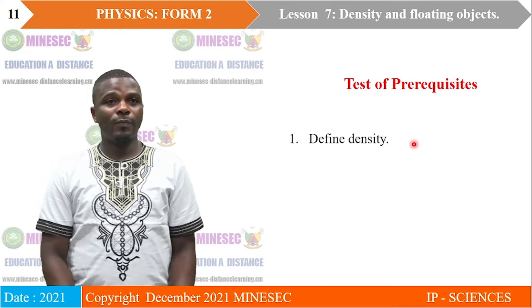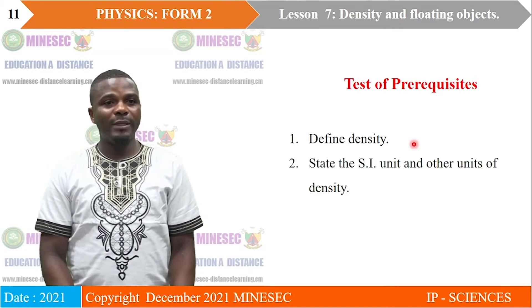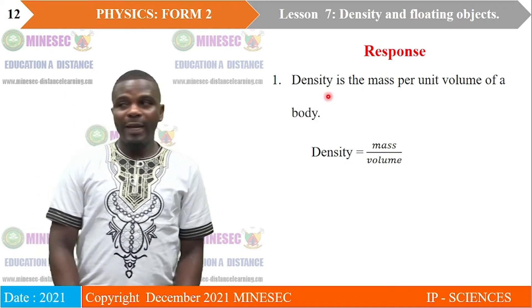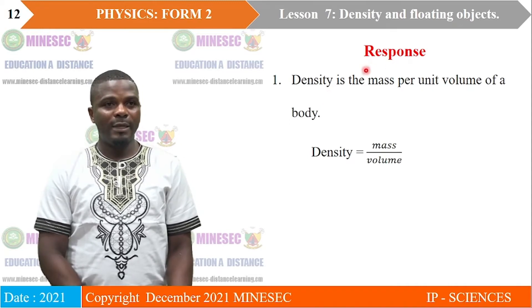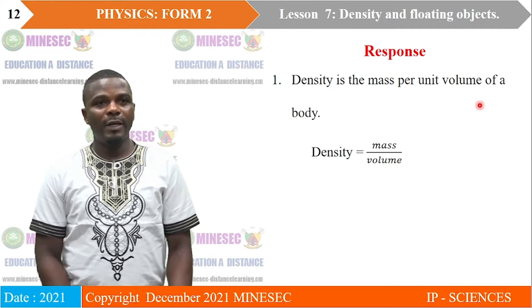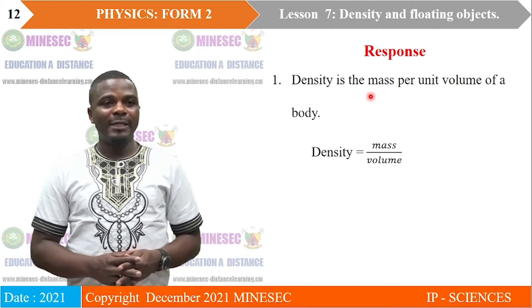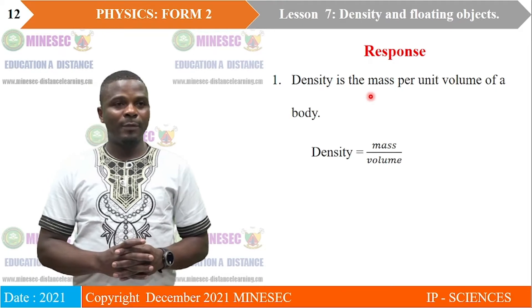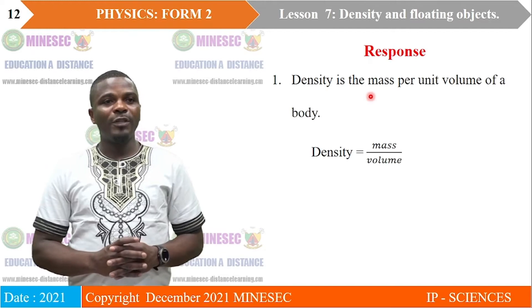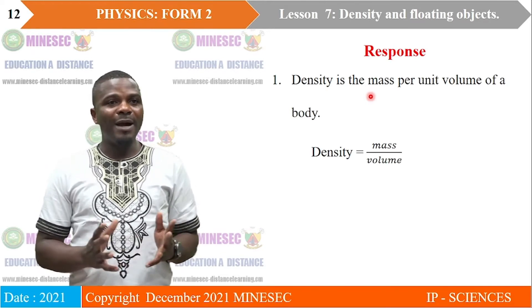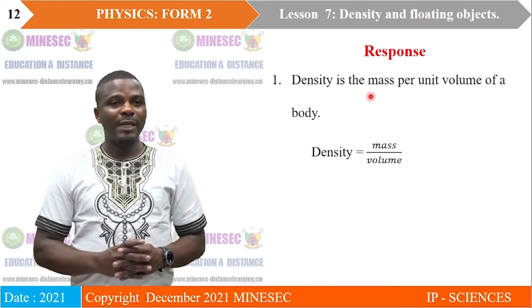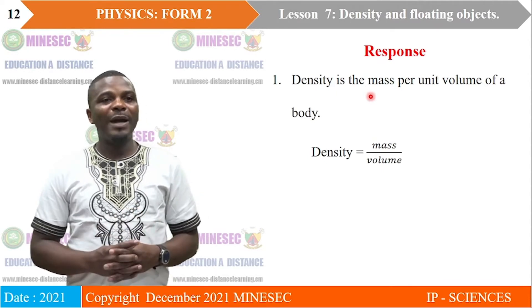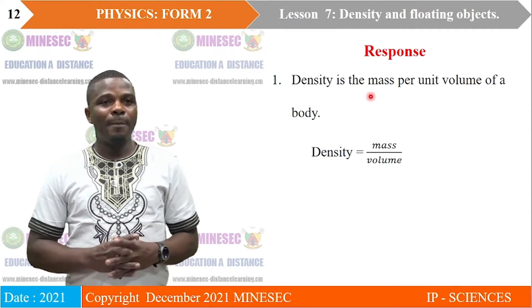Define density. Density is the mass per unit volume of a substance. Mass is the amount of material contained in a substance, and volume is the amount of space occupied by a substance. Today we are defining density again as the mass per unit volume of a substance — the amount of material contained in a given volume. A substance which is more dense has more material packed in a smaller space or a smaller volume.